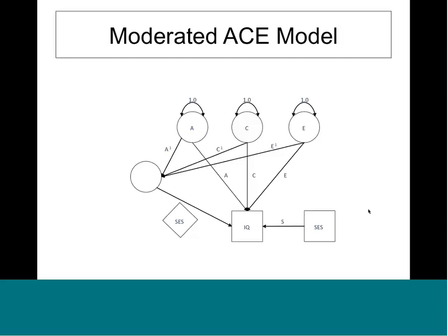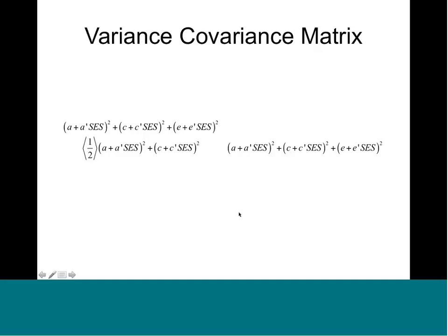We used to fit the model where we take the classical ACE model with A, C, and E paths to the phenotype and include an interaction routed through SES, which modifies the twin correlations as they interact with SES. The additive effect of genes on IQ is now a main effect plus a part moderated by socioeconomic status — a typically normal multiplicative interaction.